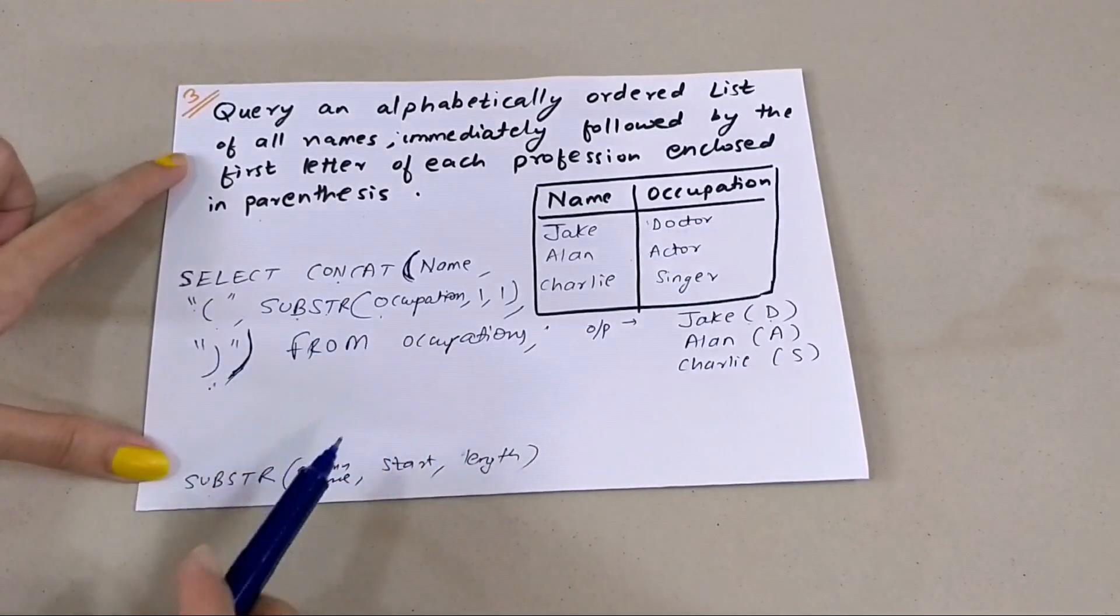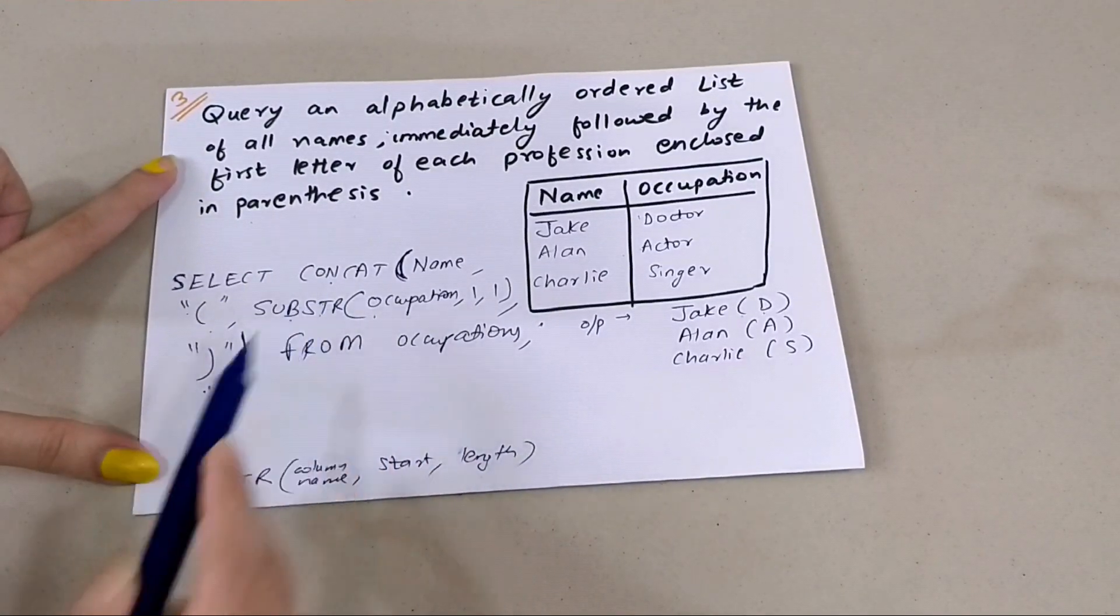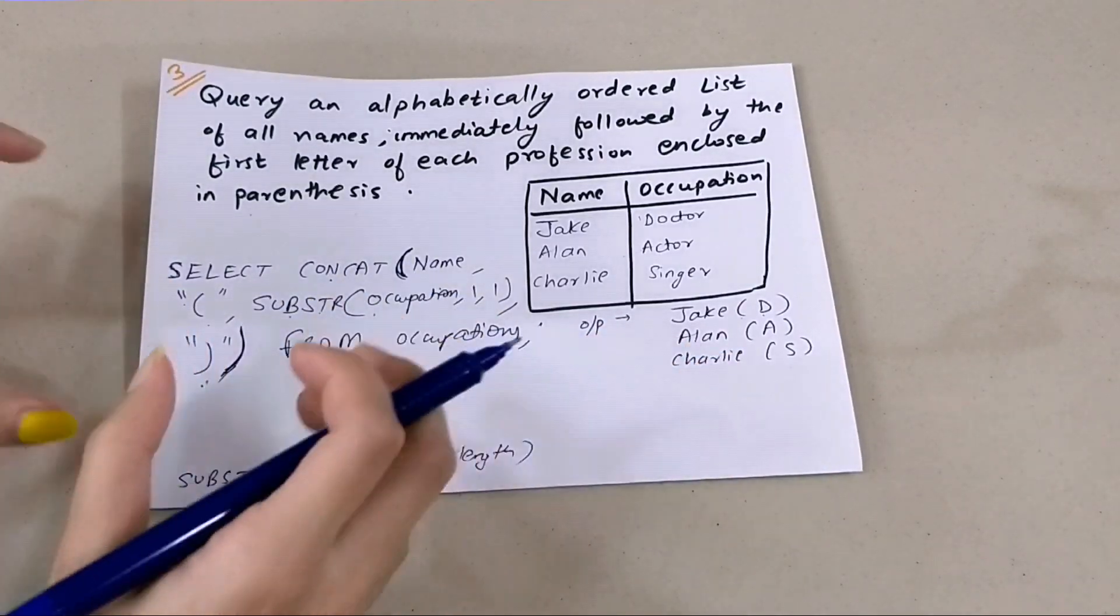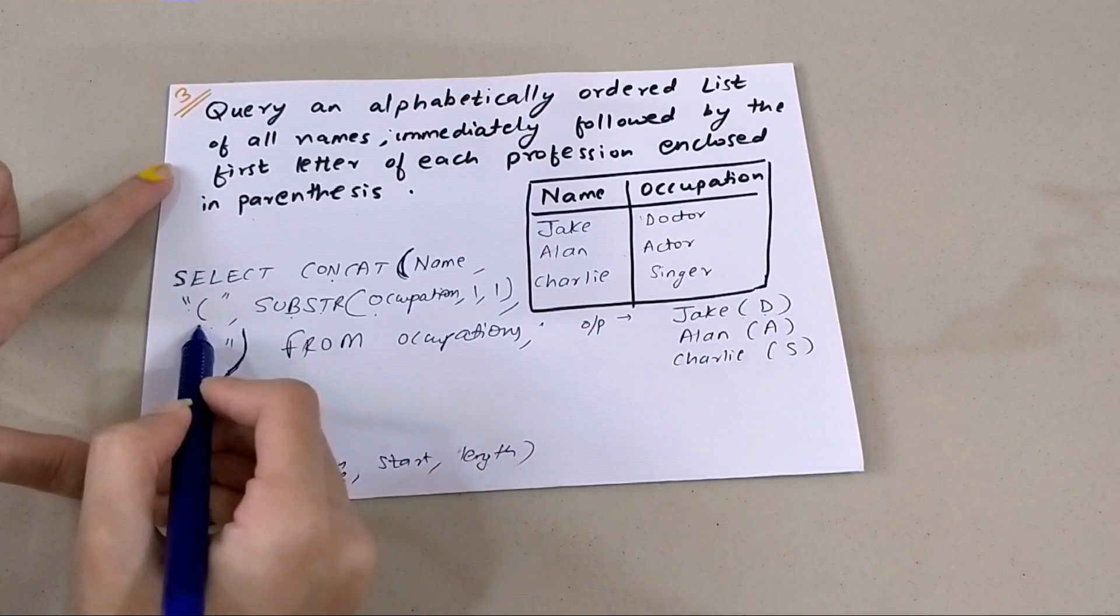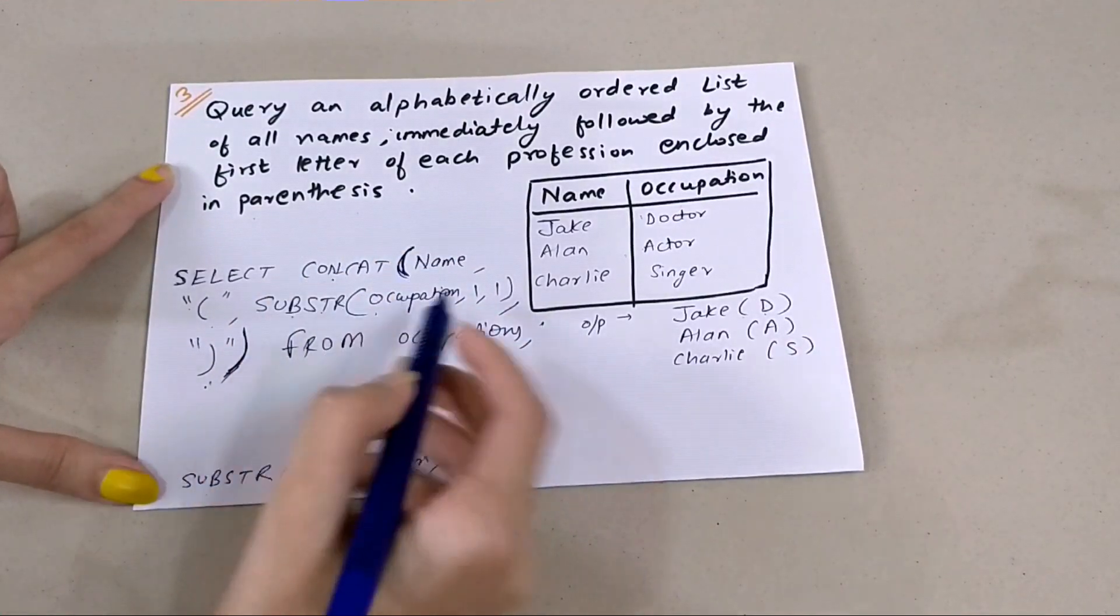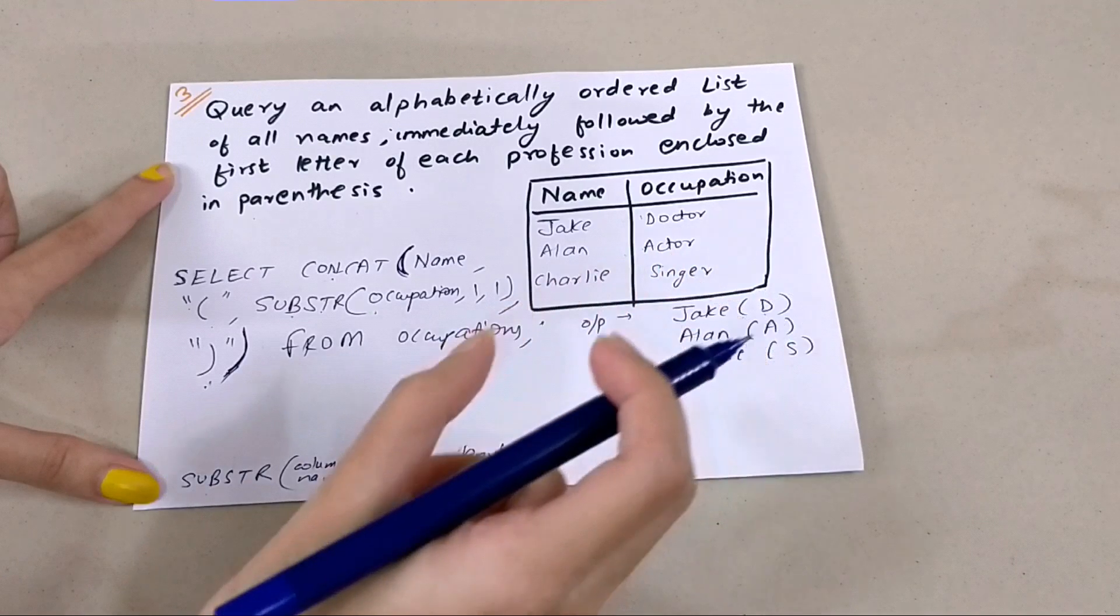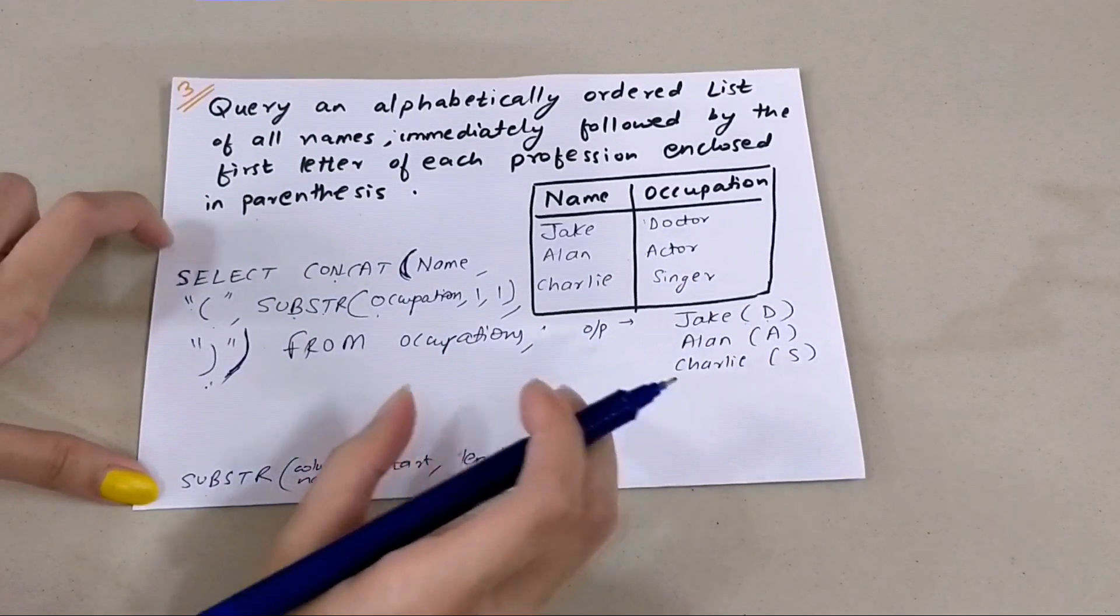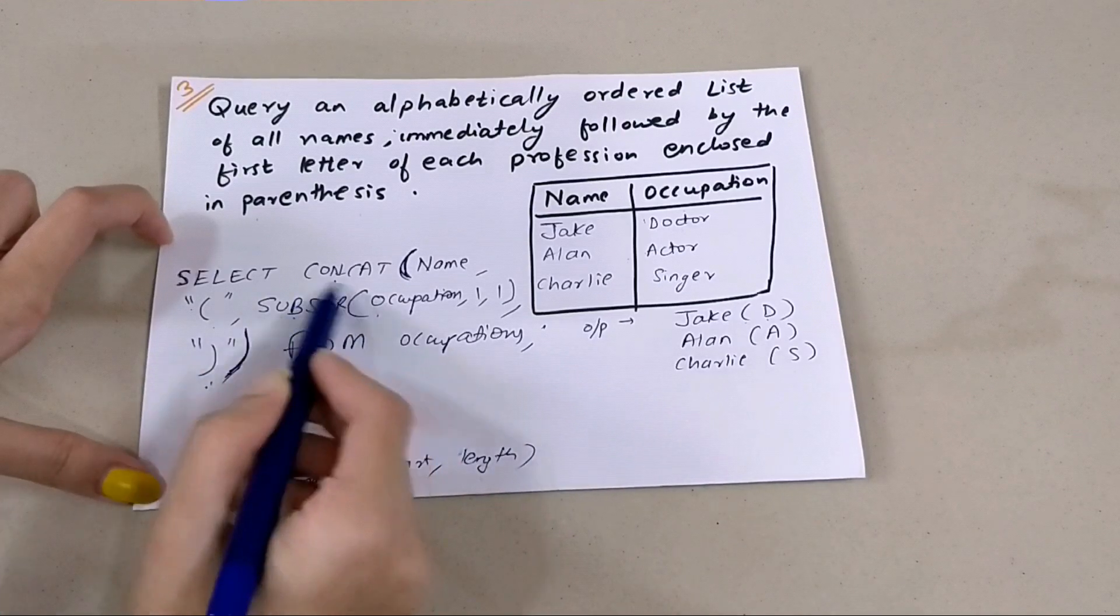The takeaway from this query is that whenever we want to combine a lot of columns or add some literals, we use CONCAT. And whenever we want to output a few letters out of a column or a big word, we use SUBSTRING.